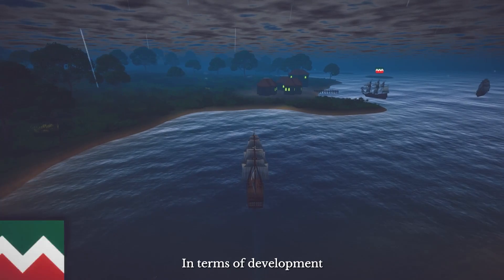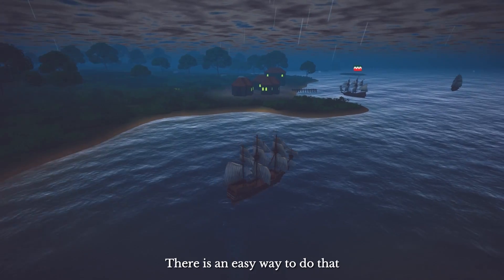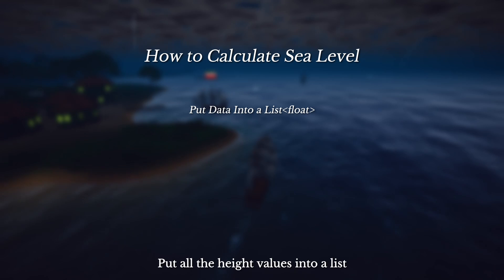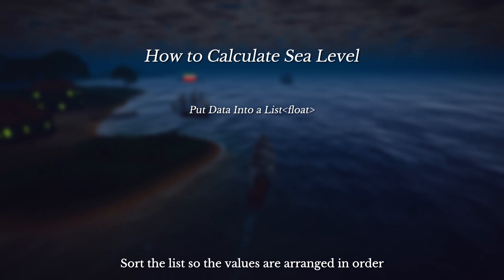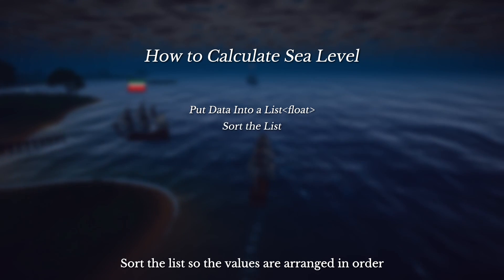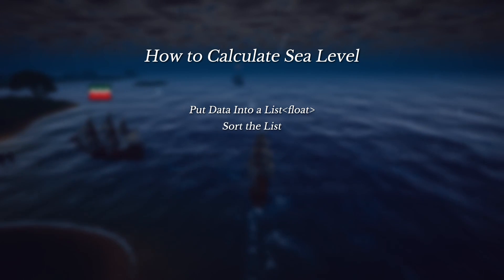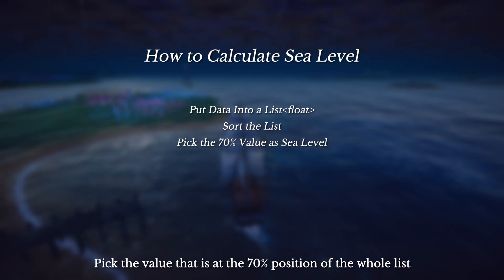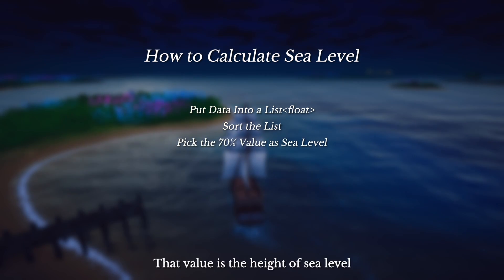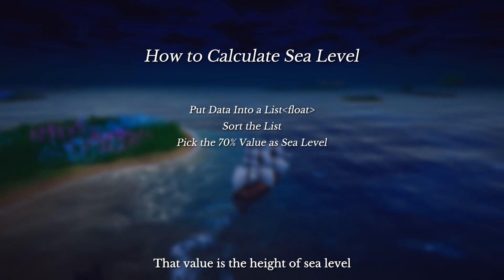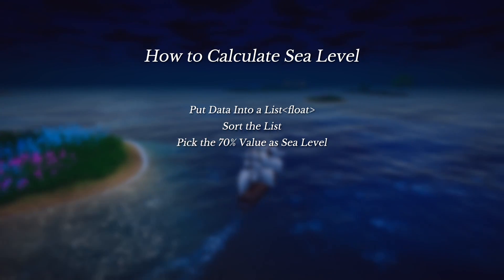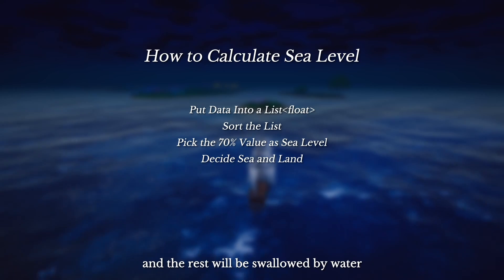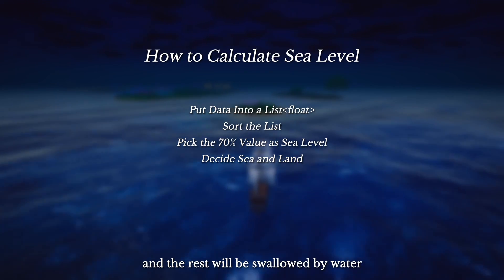In terms of development, there's an easy way to do that. Put all the height values into a list, sort the list so the values are arranged in order, then pick the value at the 70% position of the whole list. That value is the height of the sea level. Any cell with a higher value will become land, and the rest will be swallowed by water.